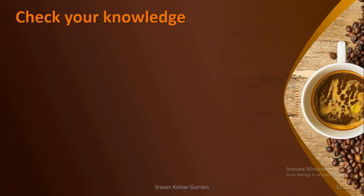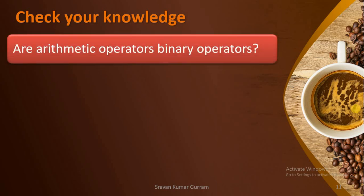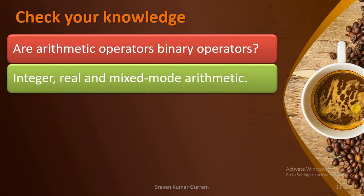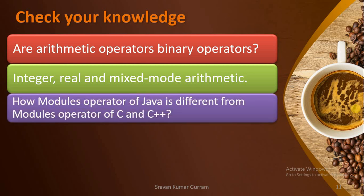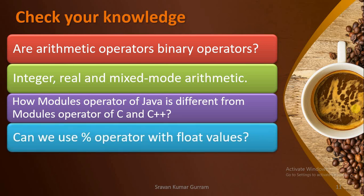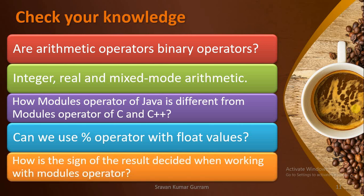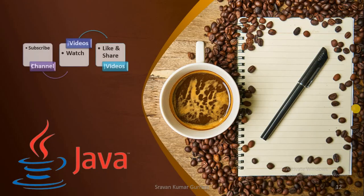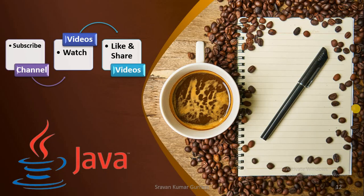Check your knowledge from this video: How are arithmetic operators binary operators? We discussed integer, real and mixed mode arithmetic operations. How is the modulus operator of Java different from that of C and C++? Can we use the modulus operator with float values in Java? How is the sign of the result decided when working with the modulus operator? If this video is useful to you, please subscribe to the channel, like and share the videos. Thank you.